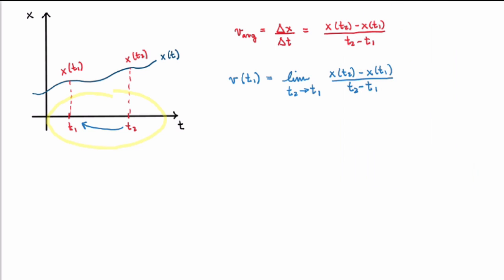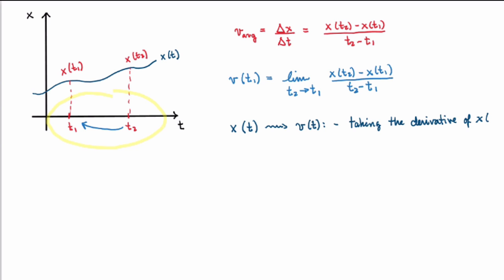All right, so this is how we define velocity. It turns out that this is a very important process. So starting from x(t), a position function, and extracting from it a velocity function v(t), is something that has a name in calculus. It's called taking the derivative of the function x(t), or equivalently, sometimes we call this differentiating. That means the exact same thing.